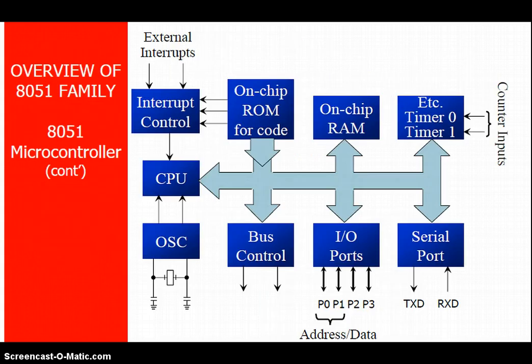This is the block diagram of the 8051 internal architecture. It consists of several blocks: interrupt control, on-chip ROM for code, on-chip RAM, Timer 0, serial port, input/output ports, bus control, oscillator, and CPU. Some signals are bidirectional. A crystal is connected, four I/O ports are present, the serial port handles transmit and receive data, data buses are connected, external interrupts are available, and counter inputs for the timer are also supported.